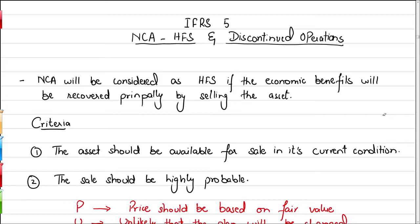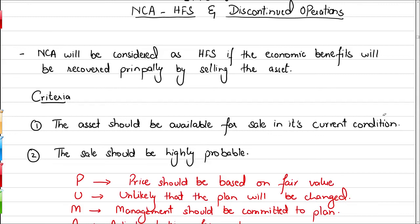There is a two-point criteria. Number one, as you can see on the screen, the asset should be available for sale in its current condition. For example, if you have a property and you think you need to do repairs or repaint it, and a buyer came today but you could not transfer the property immediately, then it is not available for sale in its current condition and cannot be classified as a non-current asset held for sale. It should be readily available for sale the very moment any buyer is willing to buy it.